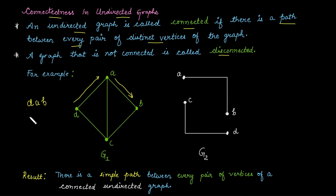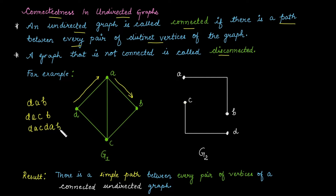Moreover, there are multiple paths that start from D and end at B. You can choose the path D → A → C → B. There is even another path: D → A → C → D → A → B. Similarly, we can find a path between any pair of two distinct vertices in this graph. We can say there is a simple path between every pair of vertices, and this holds for a connected undirected graph.